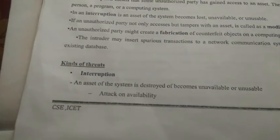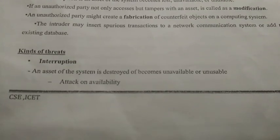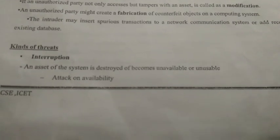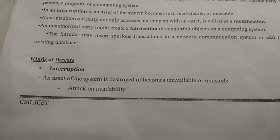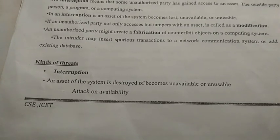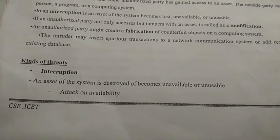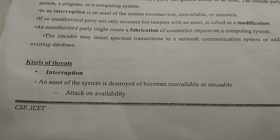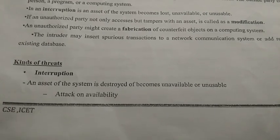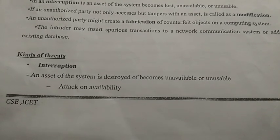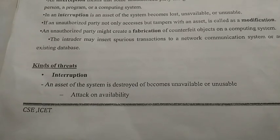The 1st one is Interruption. Interruption is when an asset of a system is destroyed or becomes unavailable or unusable. Assets include files, memory, or any resources. When assets of the system are destroyed or become unavailable or unusable, that is Interruption.